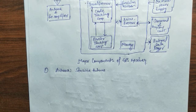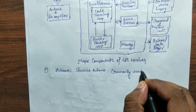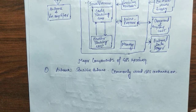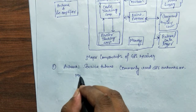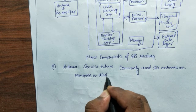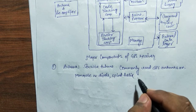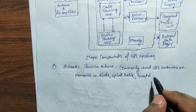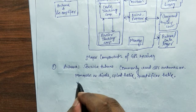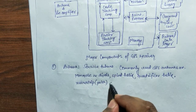Commonly used GPS antennas are: monopole or dipole, spiral helix, quadrifilar helix, microstrip, patch antenna, and choke ring.